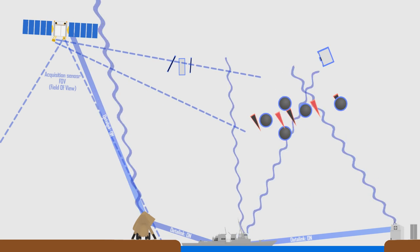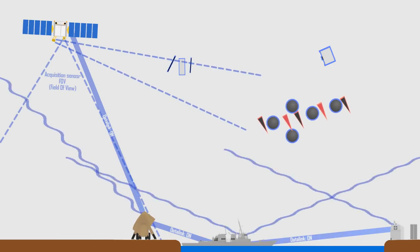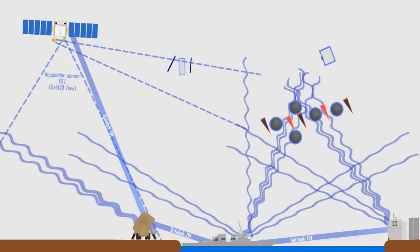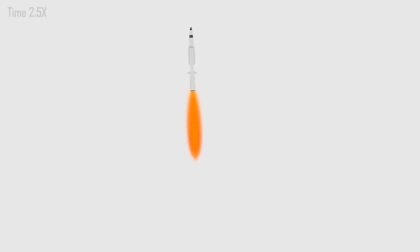Five interceptors are launched towards the three MIRVs and two indistinguishable decoys from the Aegis shore site. The defense doesn't know which are decoys and which are real MIRVs.